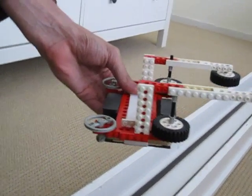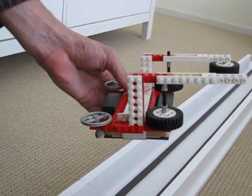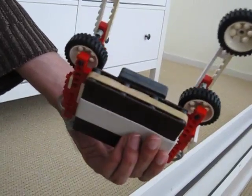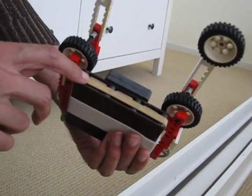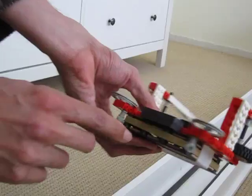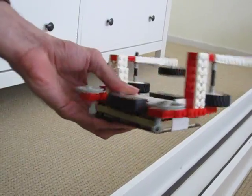I will give a demonstration of a model maglev system. The model cart consists of eight permanent magnets, four on each side, which are cylindrical in size.